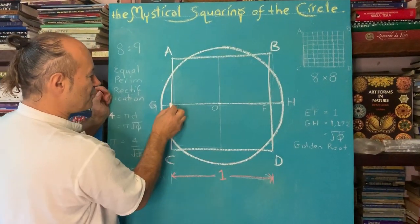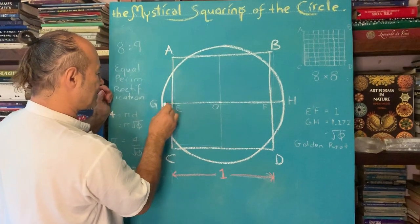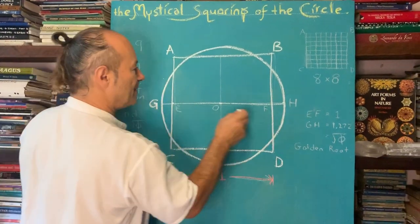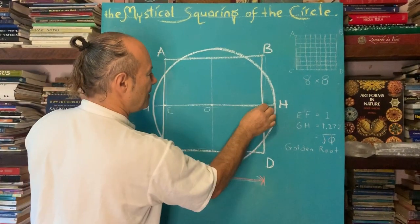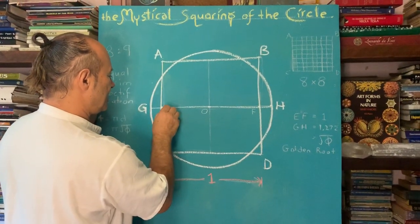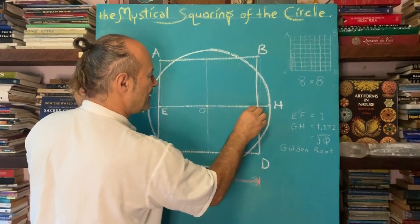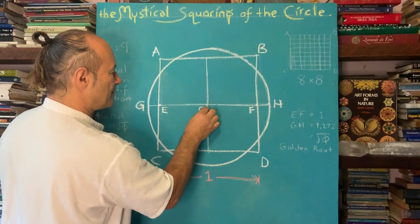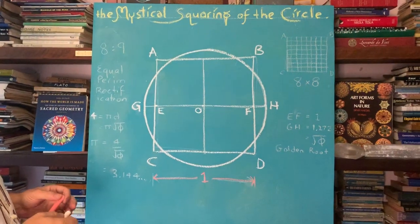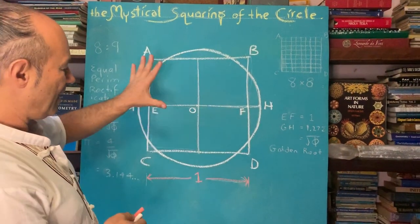But the circle that protrudes, we're going to call that G, H. And the points on the square here, we'll call this E, F. And the center is also called the origin. So that's called the origin. So now we've got our grid.